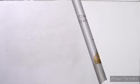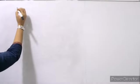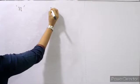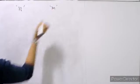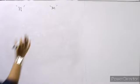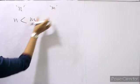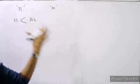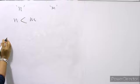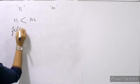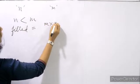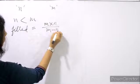If a pipe can fill a tank in n hours and another pipe can empty it in m hours, where m is greater than n (the filling rate is faster), then the time taken to fill the tank when both are open is m into n divided by m minus n hours.